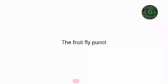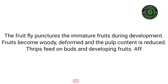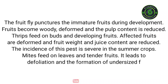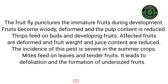Pests. The fruit fly punctures immature fruits during development, causing fruits to become woody, deformed, with reduced pulp content. Thrips feed on buds and developing fruits; affected fruits are deformed with reduced fruit weight and juice content, and this pest is severe in summer crops. Mites feed on leaves and tender fruits, leading to defoliation and the formation of undersized fruits.